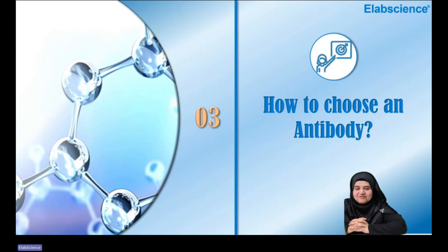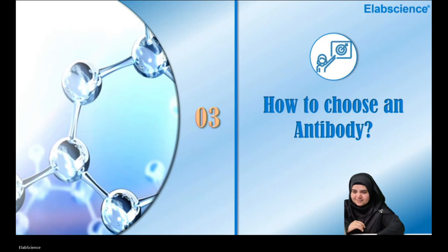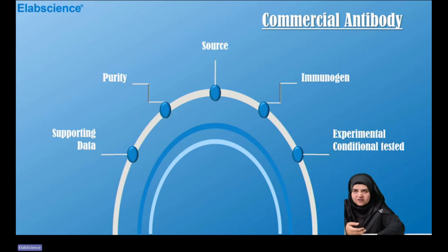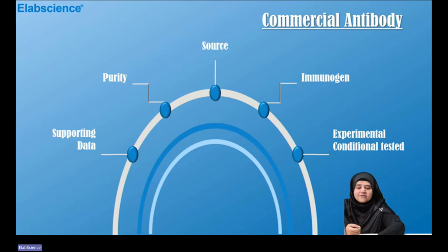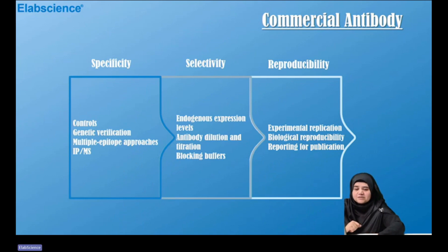How to choose an antibody — a painful question for every researcher working with antibodies. Several things need to be taken into consideration. When selecting any commercial antibody, carefully examine the source, purity, and immunogen type. Ask the supplier whether they have tested these antibodies under experimental conditions such as IHC, IF, ELISA, etc., and whether they can provide supporting data. The three main aspects to look for are specificity, selectivity, and reproducibility.